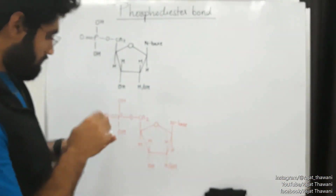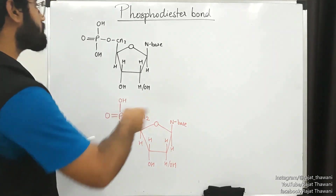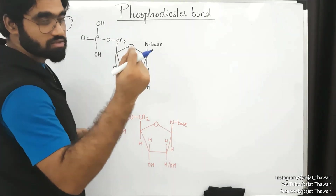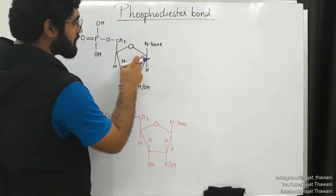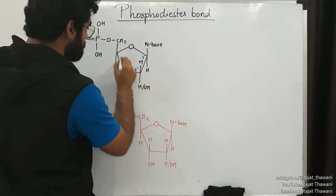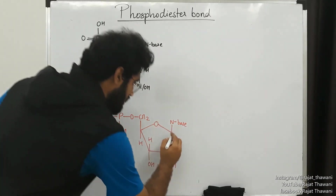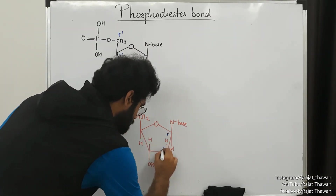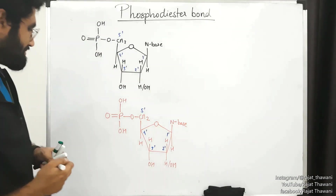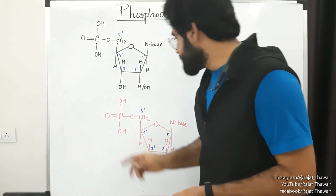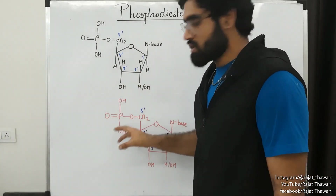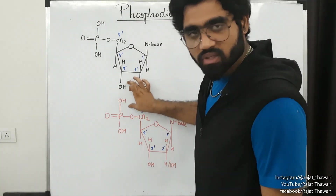Before starting the explanation, it's better if we number the carbons of the pentose sugar. As explained in the last video, they are numbered one prime, two prime, three prime - this is the anomeric carbon with the nitrogen base attached, so this is one prime, two prime, three prime, four prime, and five prime. Similarly, number the second nucleotide: one prime, two prime, three prime, four prime, five prime. You observe that we need to coincide the OH of the phosphate group and this carbon's OH, so there is going to be some reaction between these both.